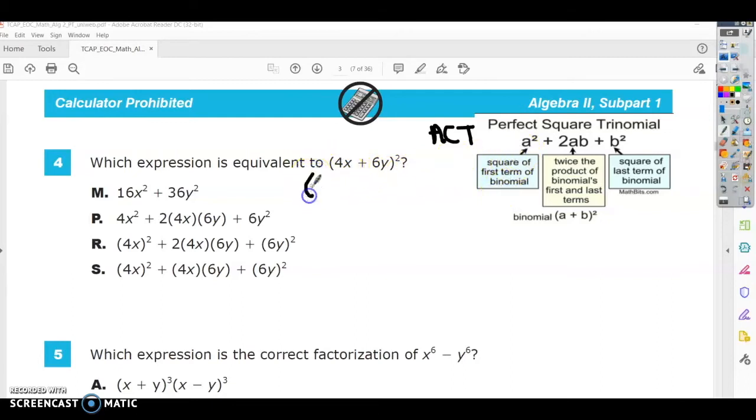Which means we're going to square 4x, and then we're going to do twice the product, means I have to multiply, so I'm going to do twice the product of a and b, so that's 4x and 6y. And then I'm going to square the last term, which is my 6y.